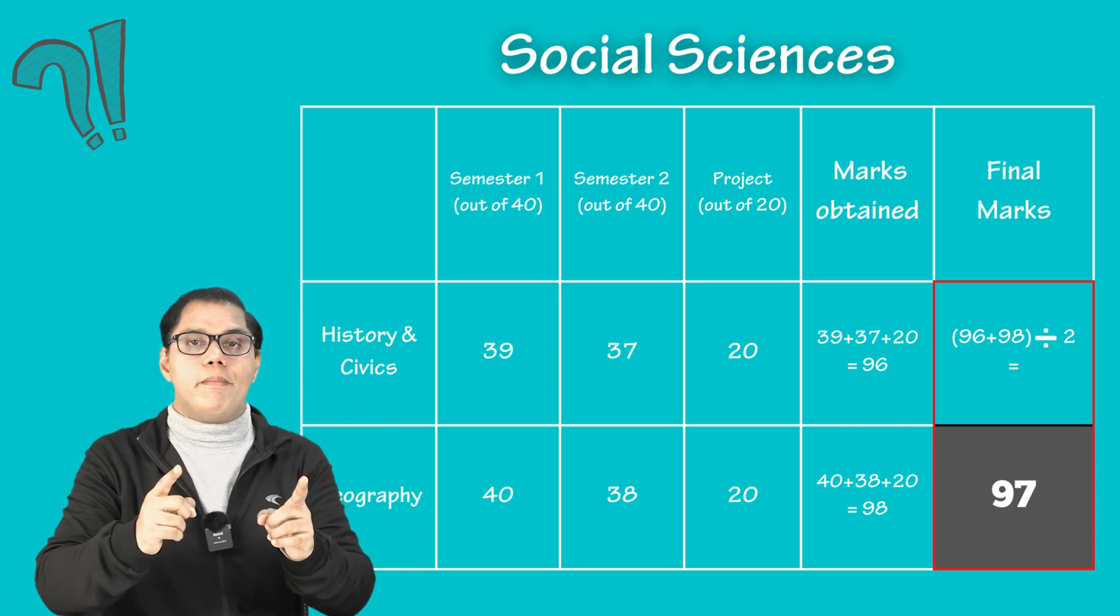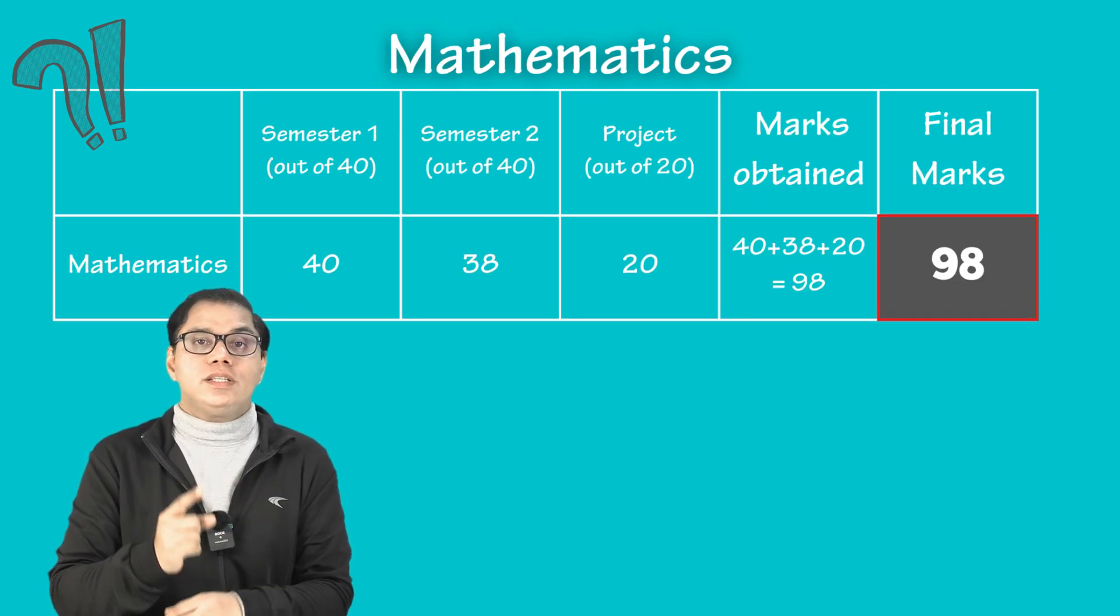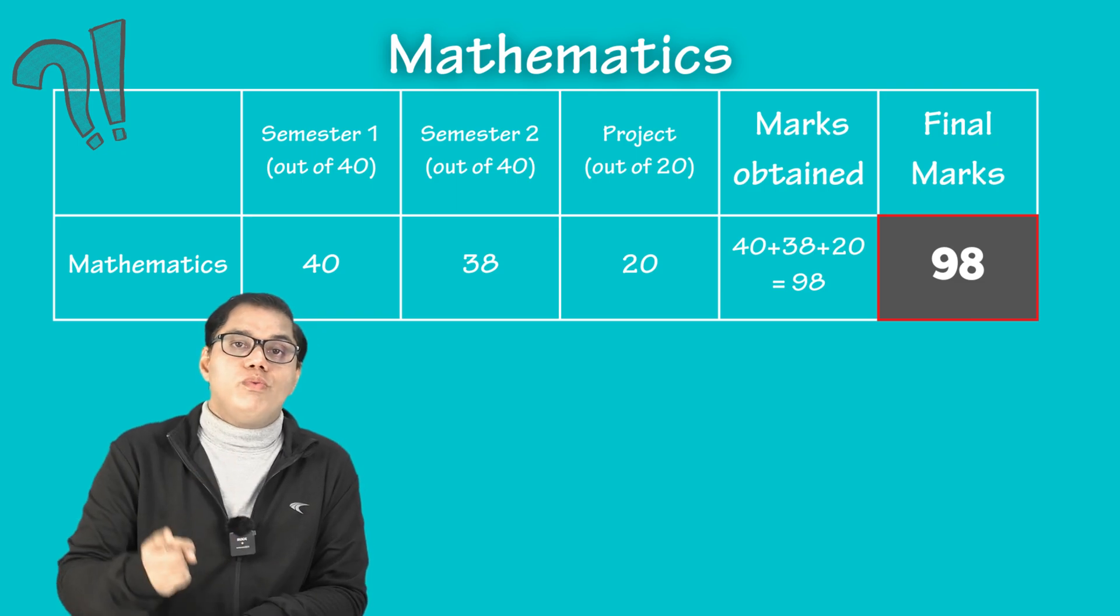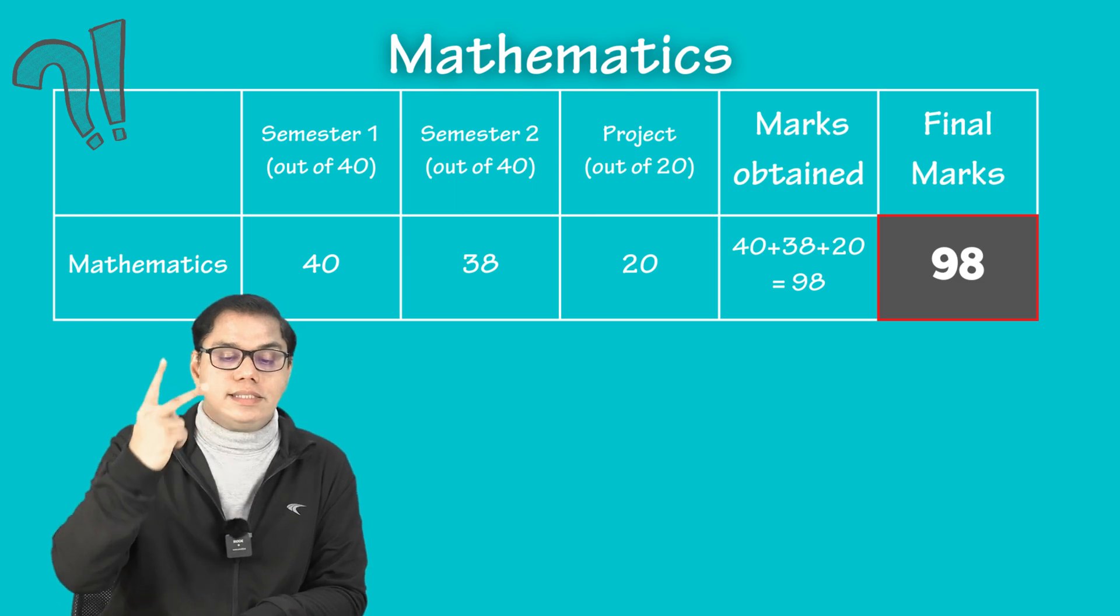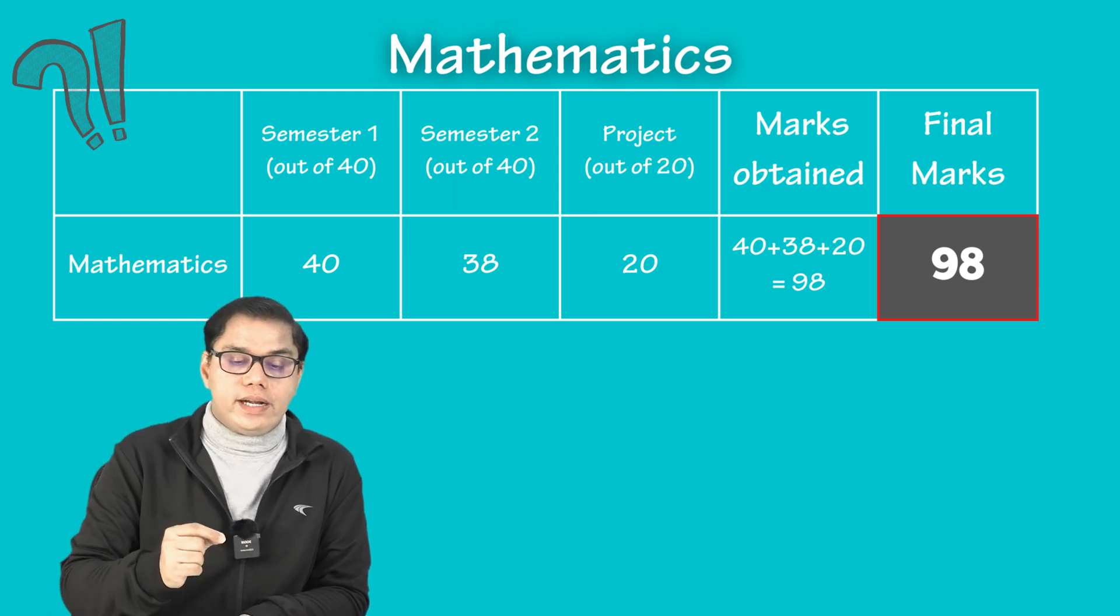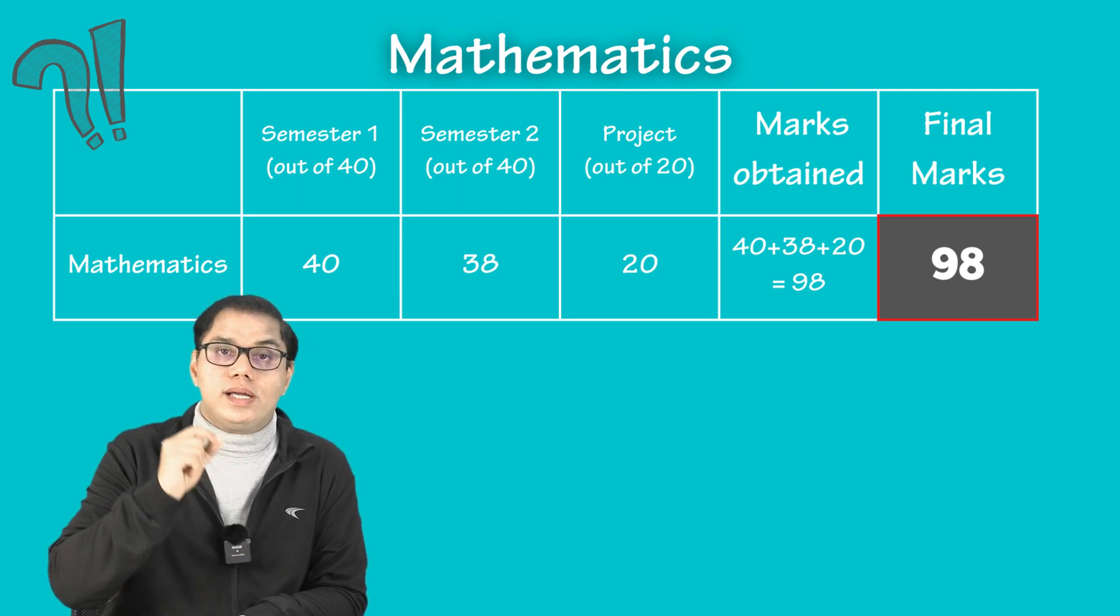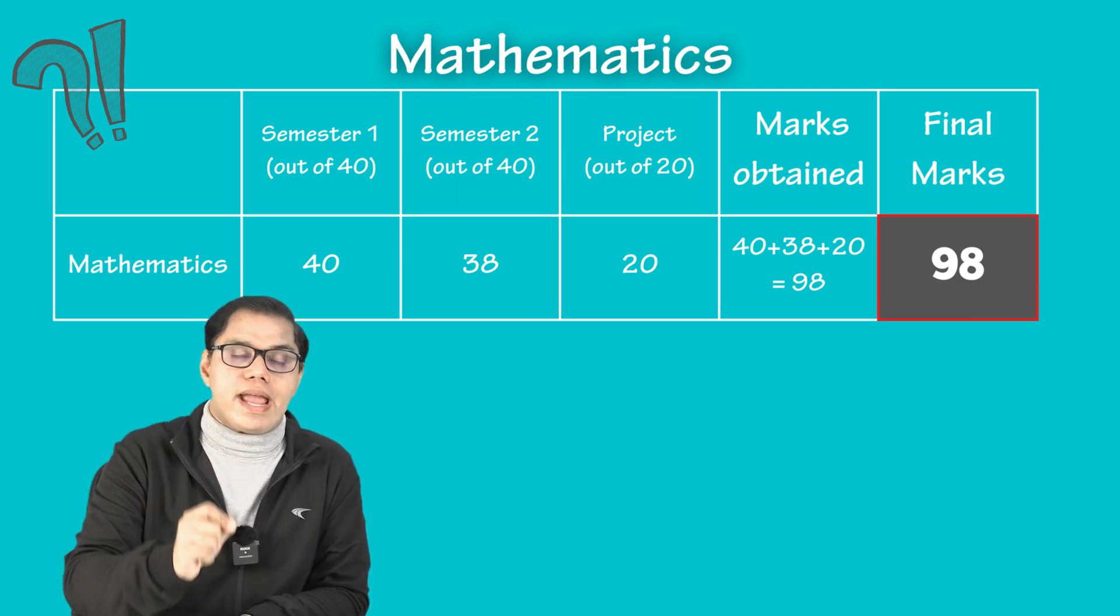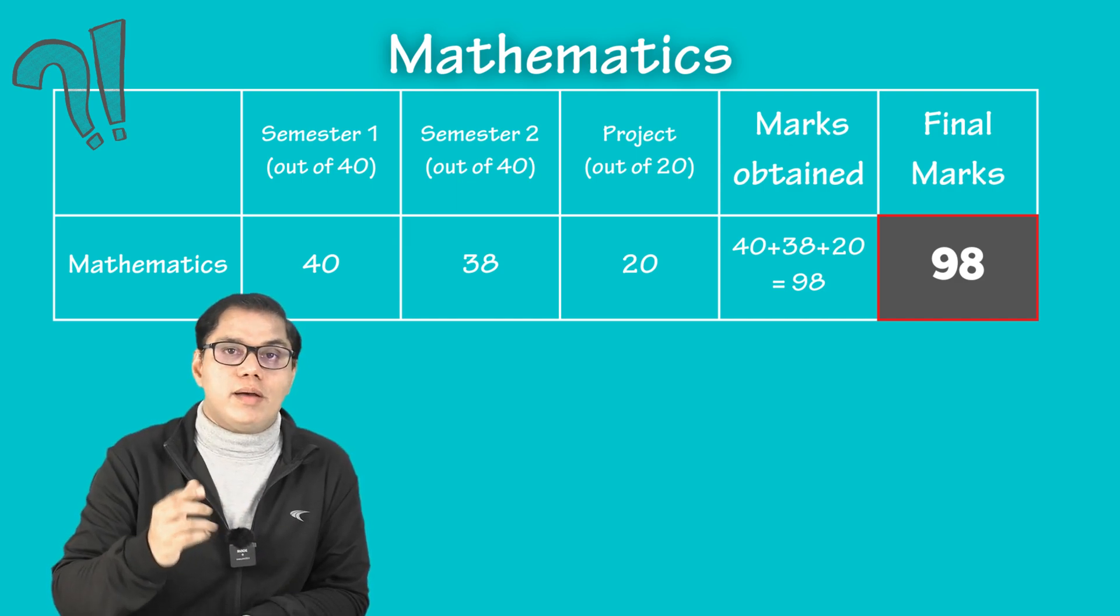Coming on to subject number four, mathematics, which is a stand-alone subject. In semester one, we will say that a student have scored 40 on 40. And in semester two, 38 on 40. Project work, teacher has given him full 20 marks. His total is 98 and this 98 is the final score for mathematics.